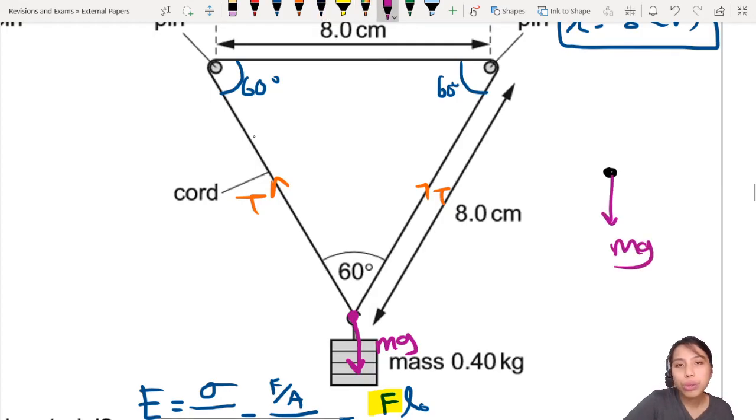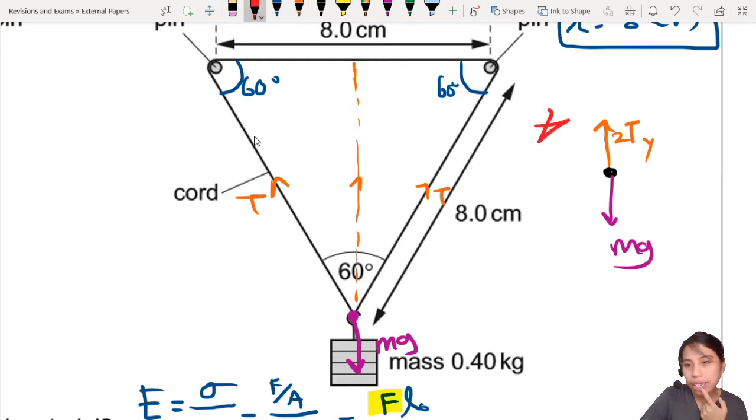You would say mg equals both vertical tensions, so 2·Ty, because there's two T's and you've got to resolve them into components—the vertical component. With this in mind, this is an important one. From mg equals 2·Ty, we can find what force T is.